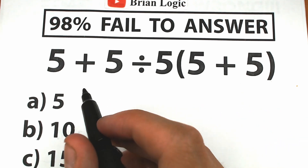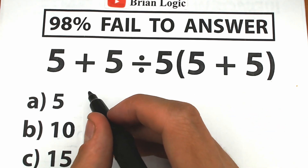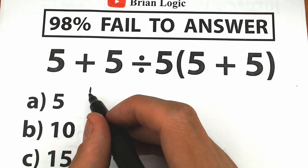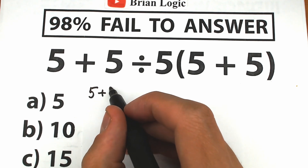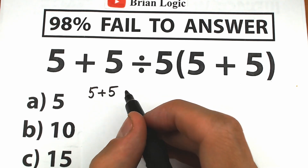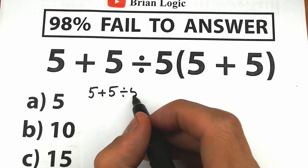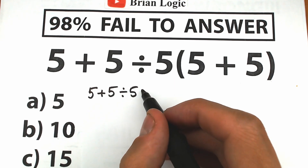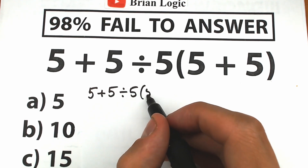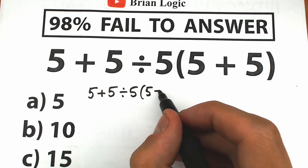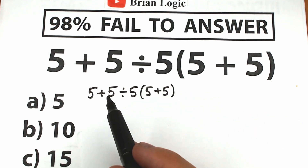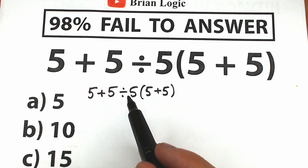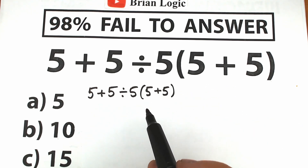Let's rewrite this challenge. We have 5, plus 5 divided by 5, and 5 plus 5 inside parentheses. As you can see, we have addition, division, multiplication, and addition.